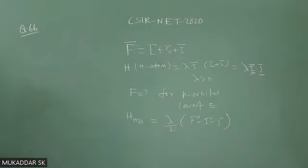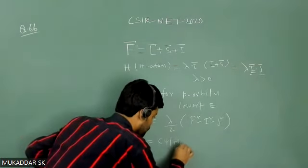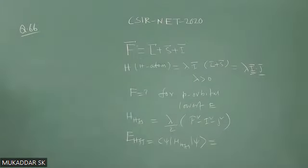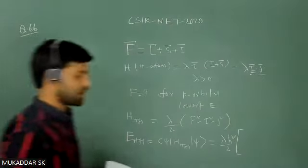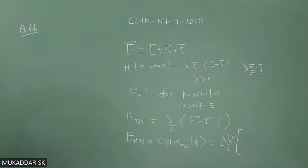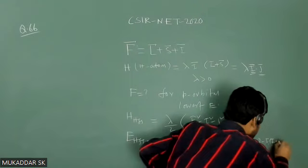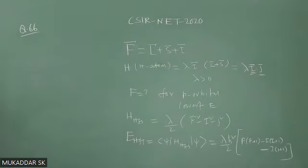You can write I·J similar to how you write L·S. So the energy E_HFS equals the expectation value ⟨ψ|H_HFS|ψ⟩, meaning you calculate the expectation values of F², I², and J². Taking those values, you get (λℏ²/2)[F(F+1) − I(I+1) − J(J+1)], since the expectation value of F² is F(F+1)ℏ², of I² is I(I+1)ℏ², and of J² is J(J+1)ℏ².